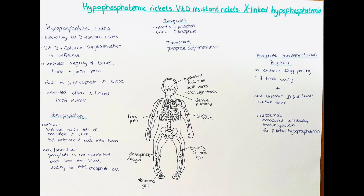Also in blood samples, alkaline phosphatase levels will frequently be high. Regarding treatment, first-line therapy is with phosphate supplementation. In children, the dosing is 10 milligrams per kilogram four times a day, or sometimes even more. Oral vitamin D is also given in the form of calcitriol, which is the active form of vitamin D. A relatively new drug known as burosumab, which is a monoclonal immunoglobulin, is now FDA approved and is used in the treatment for X-linked hypophosphatemia.